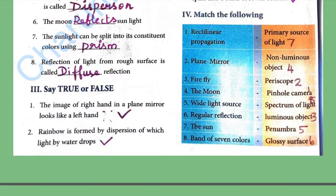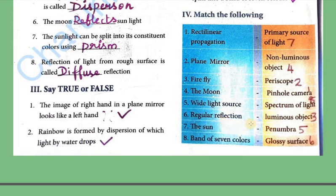Match the following. Rectilinear propagation — pinhole camera. Plane mirror — periscope. Firefly — luminous object. Moon — non-luminous object. Wide light source — penumbra. Regular reflection — glossy surface. The sun — primary source of light. Band of 7 colours — spectrum of light.